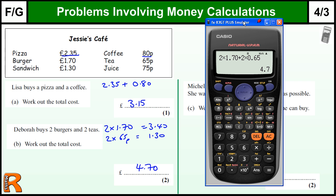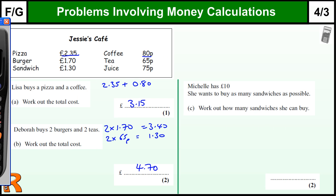There's still a bit to go. Let's just do this last bit. Michelle has £10, she wants to buy as many sandwiches as possible. Work out how many sandwiches she can buy. So sandwiches are £1.30, so we need to do 10 divided by £1.30.